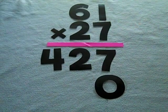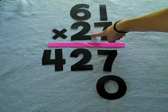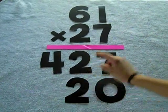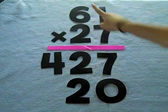Step 3. Multiply the tens place. 2 times 1 is 2. 6 times 2 is 12.